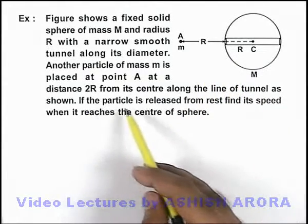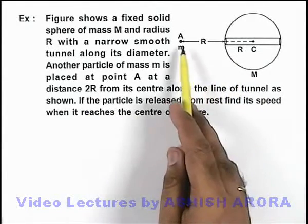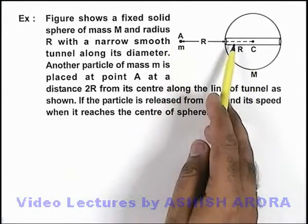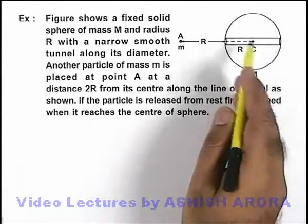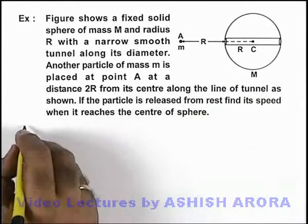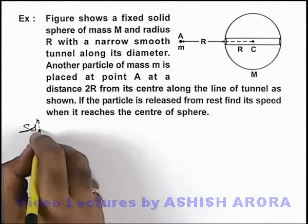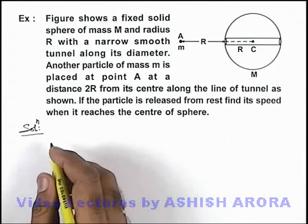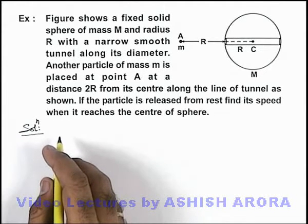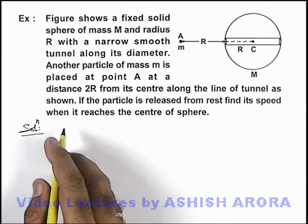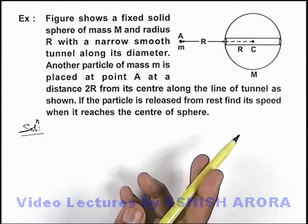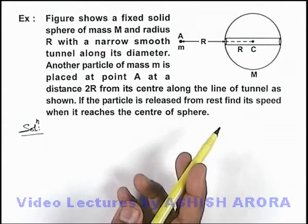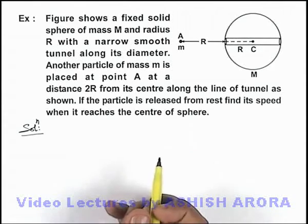If the particle is released from rest, obviously due to attraction of M it will start moving towards the sphere, and we are required to find its speed when it reaches the center of sphere. In this situation, we can directly use energy conservation or work energy theorem. Whenever we are required to calculate the speed of a particle in its motion, it is advisable to use energy conservation.